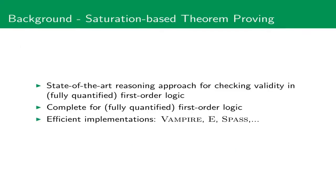Let's start with some background. Saturation-based theorem proving is a state-of-the-art reasoning approach for checking validity in first-order logic containing arbitrary quantification. It's complete for first-order logic even in the presence of arbitrary quantifier alternations, and there exist efficient implementations. In particular, the theorem prover Vampire, which Martin and I contribute to, and some other provers like E or SPASS.